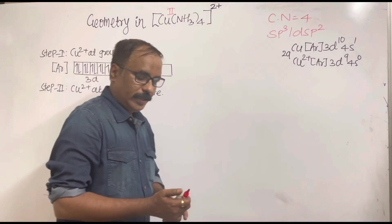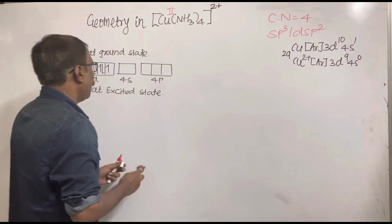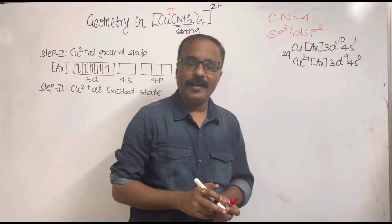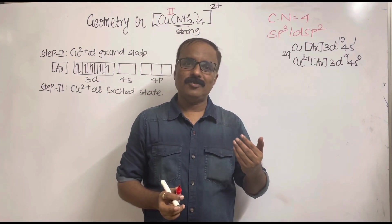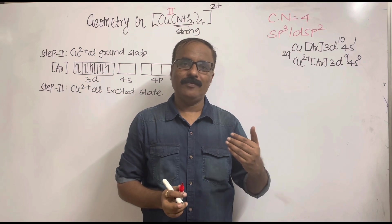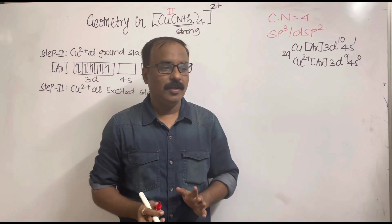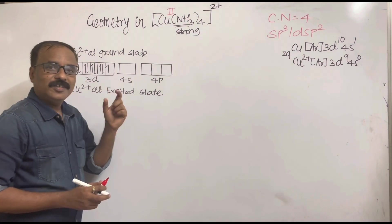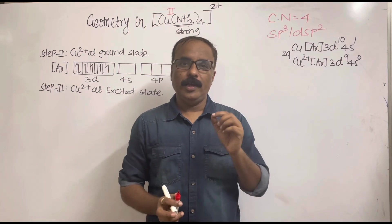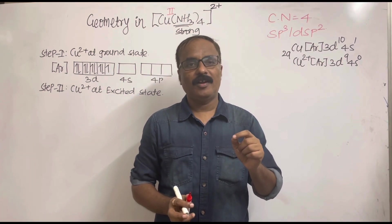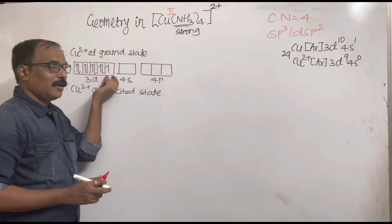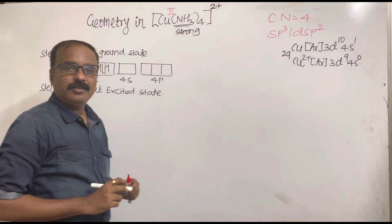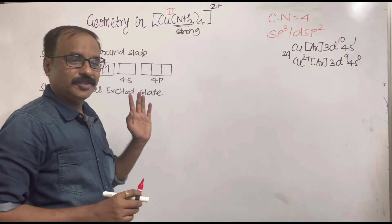Step two is the excited state electronic configuration. Ammonia is a strong ligand. When strong ligands approach the metal ion, inner pairing of electrons takes place in 3d. However, in this case there is only one unpaired electron in 3d, so there is no space for inner pairing — all other electrons are already paired.